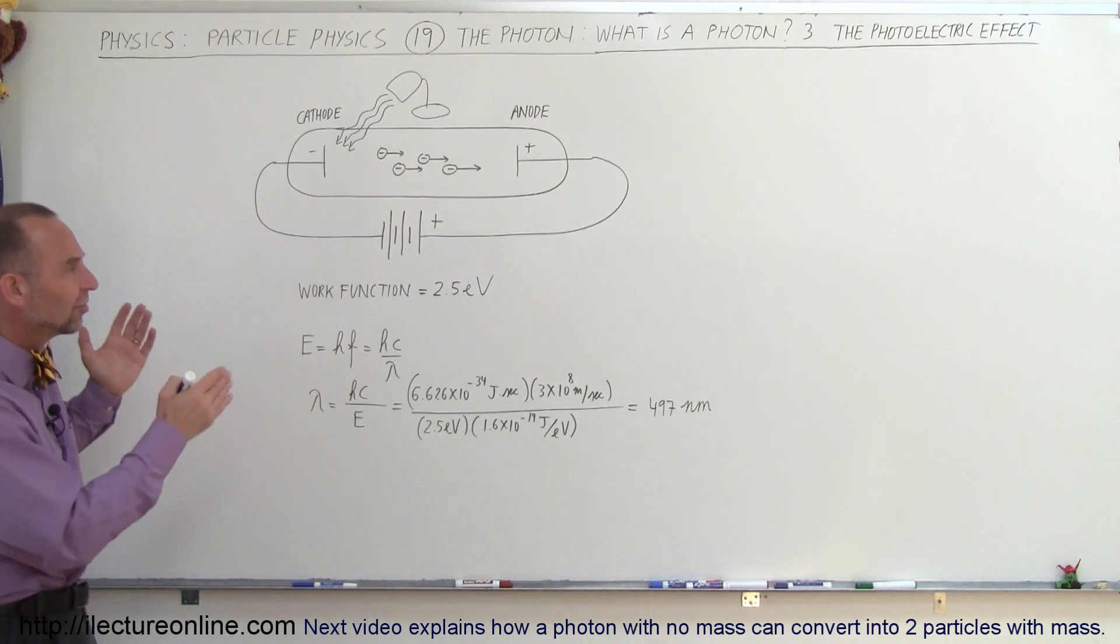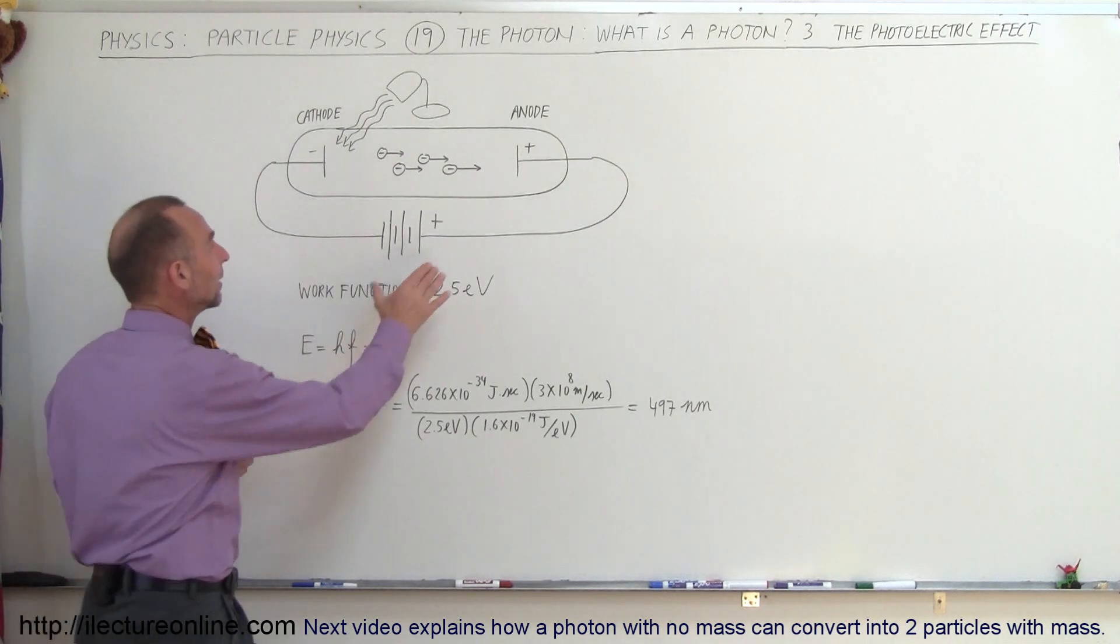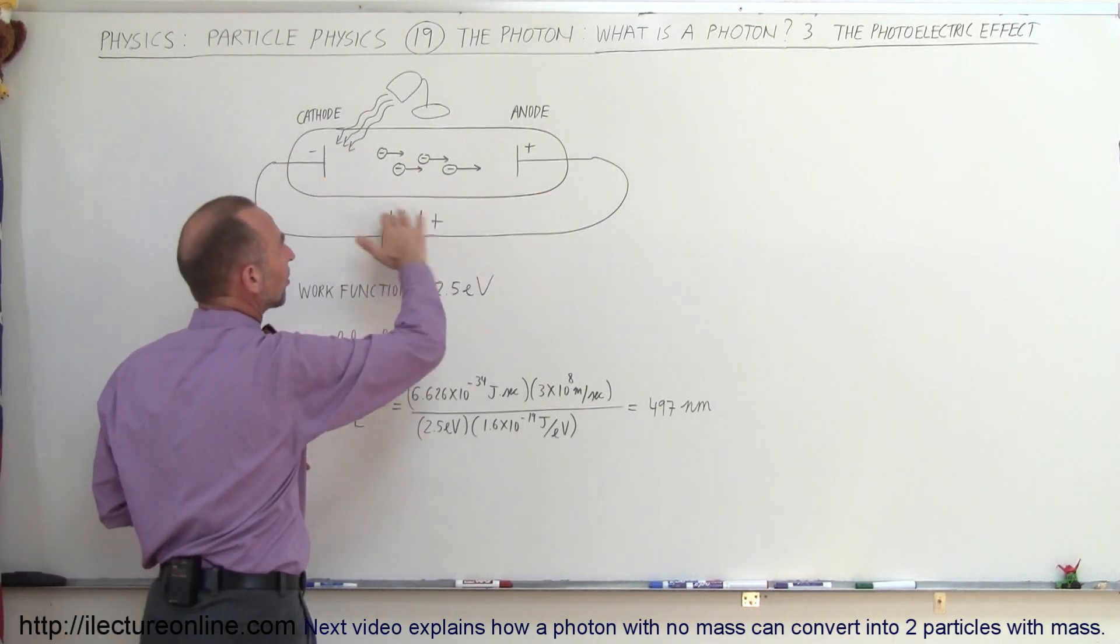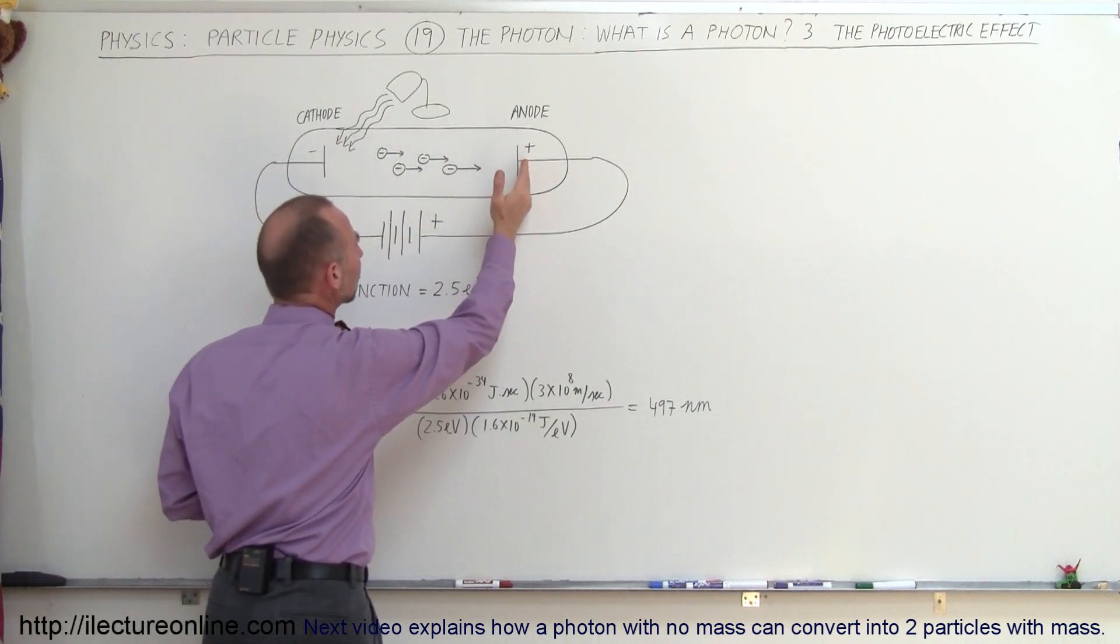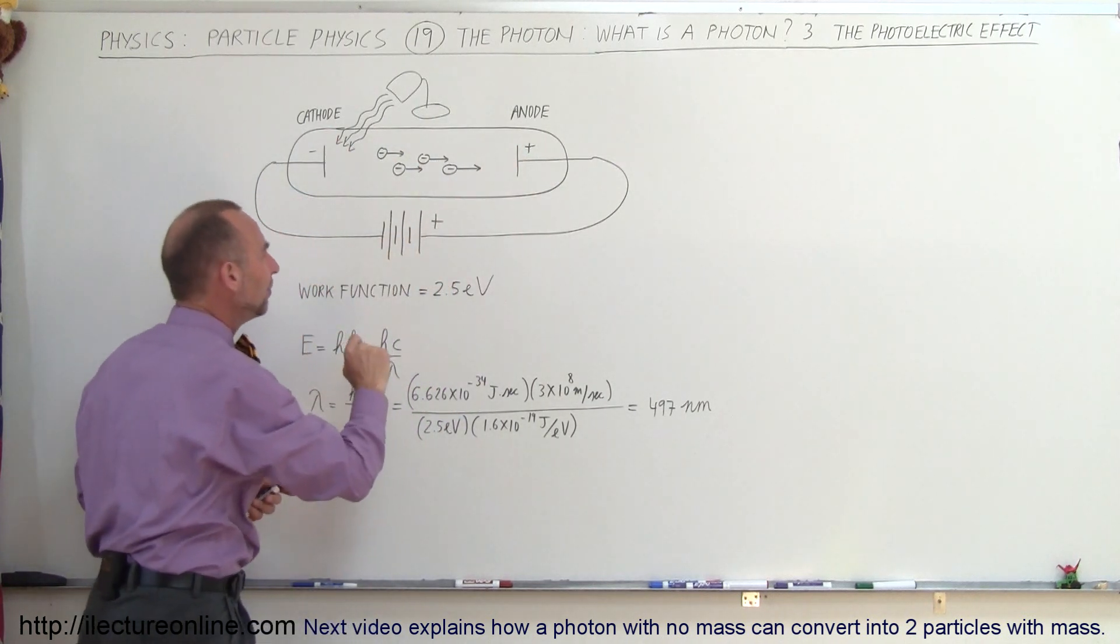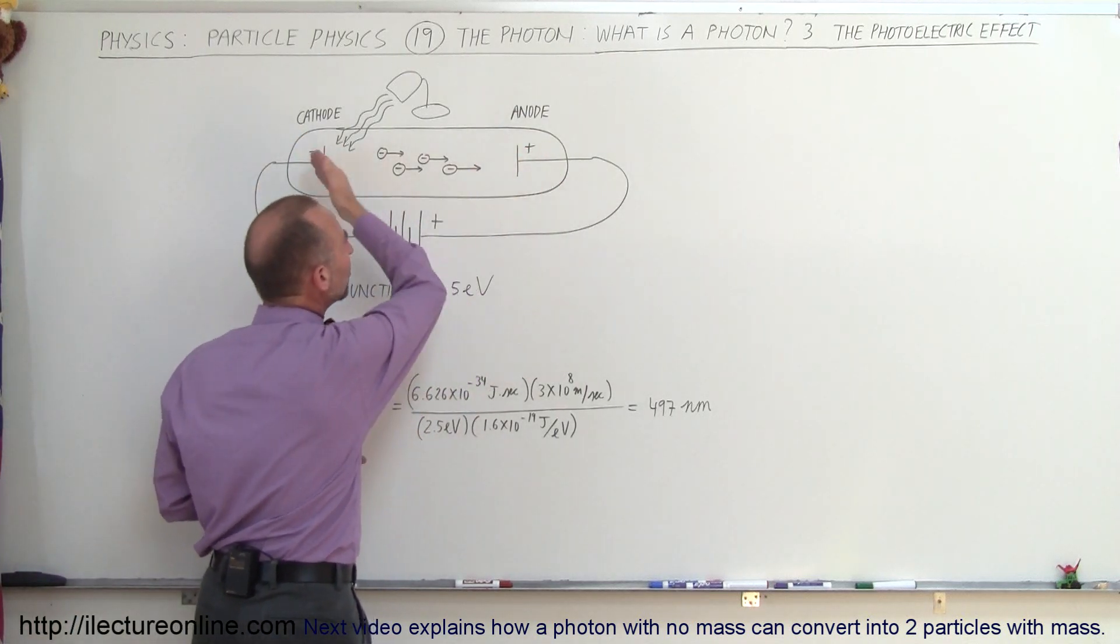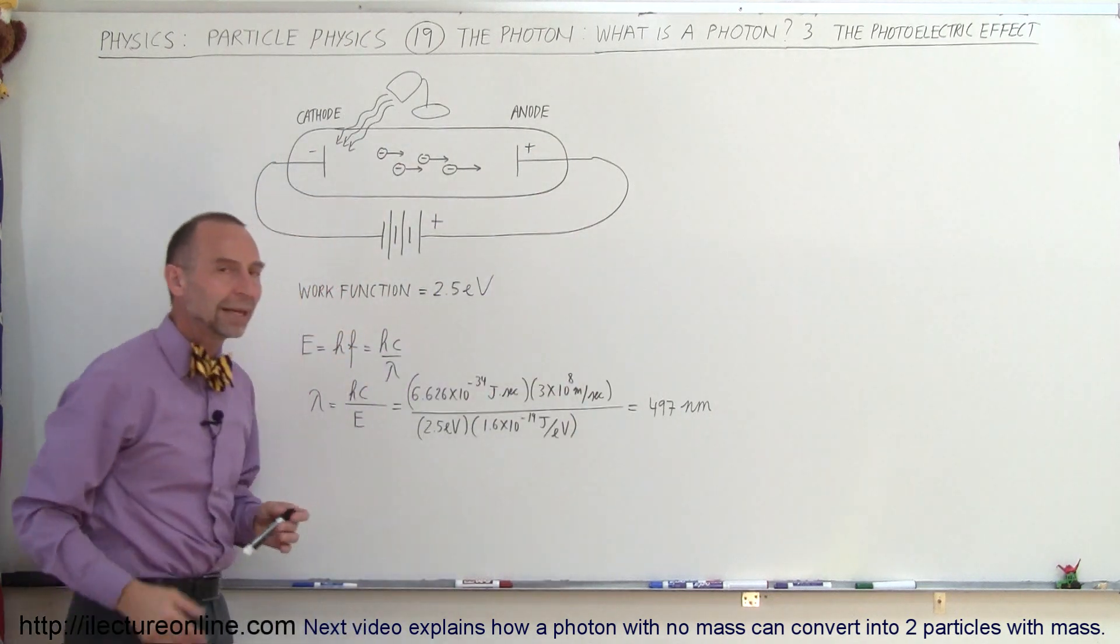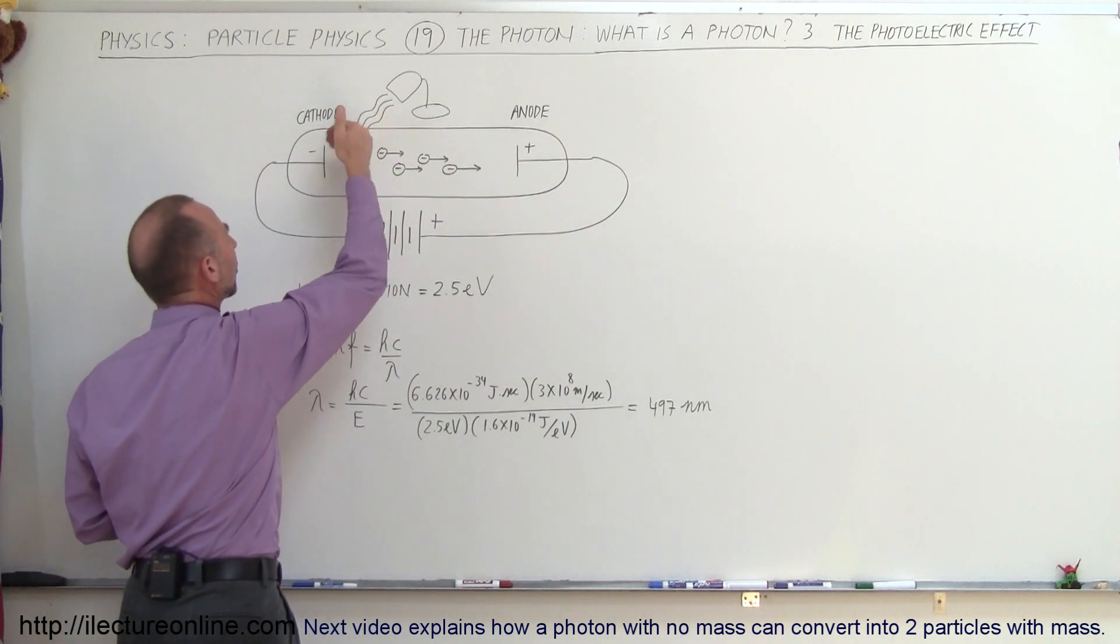So how did it work? Well, here's a simplistic diagram of the experiment. Here we have an evacuated glass tube, we had a cathode on one side and an anode on the other side, and we have a big battery right here providing the negative end to the cathode and the positive end to the anode, so there would be an electric field across here. And then the experiment would shine light on the cathode, and of course the energy of the photons in the light, which was what was presumed,